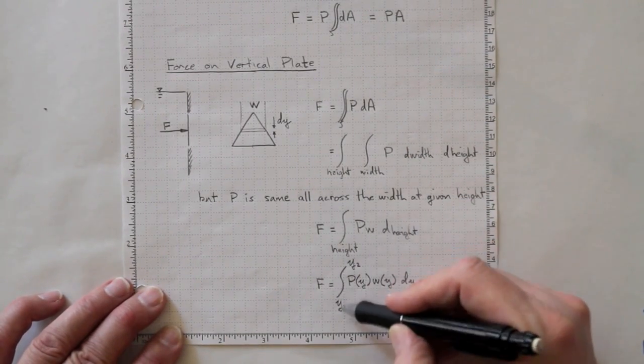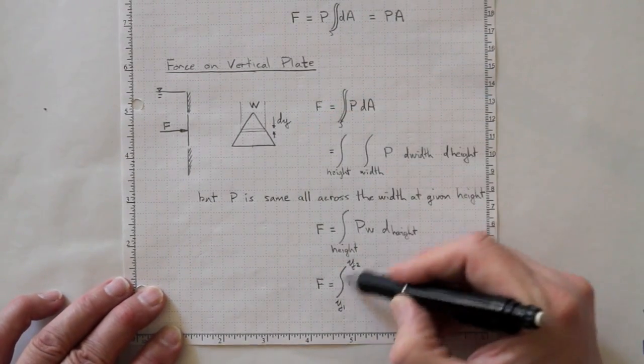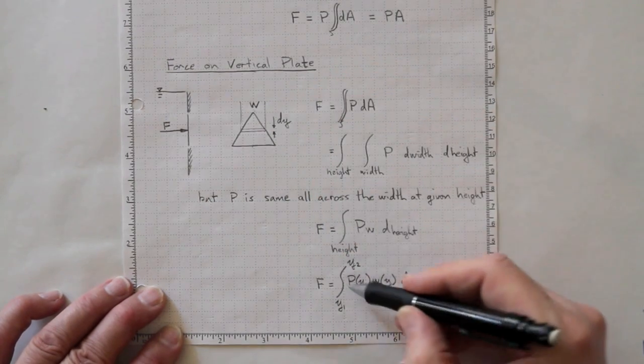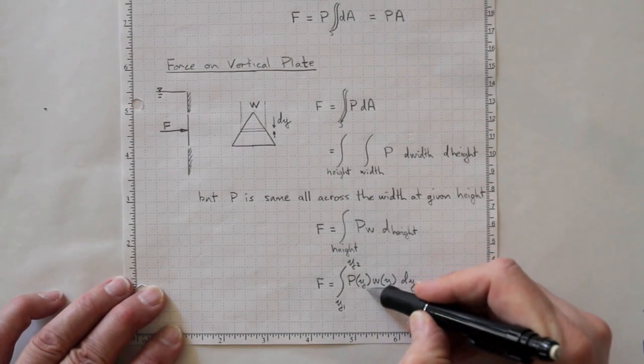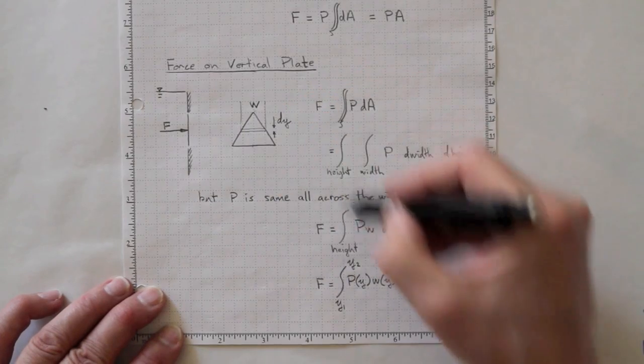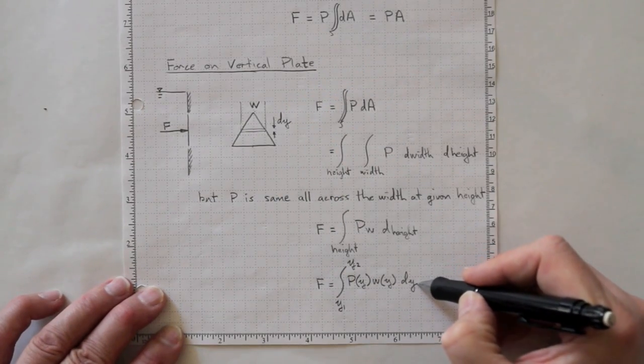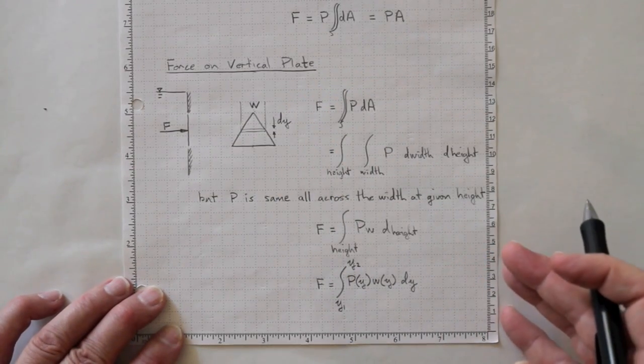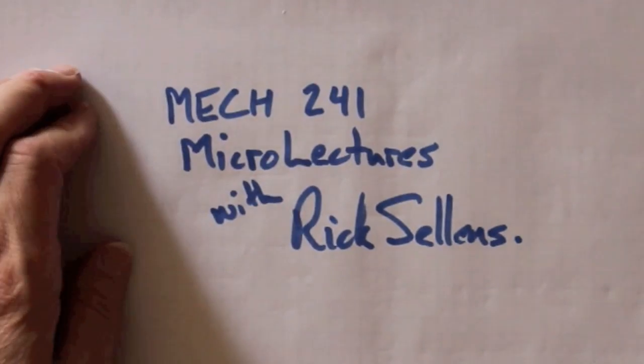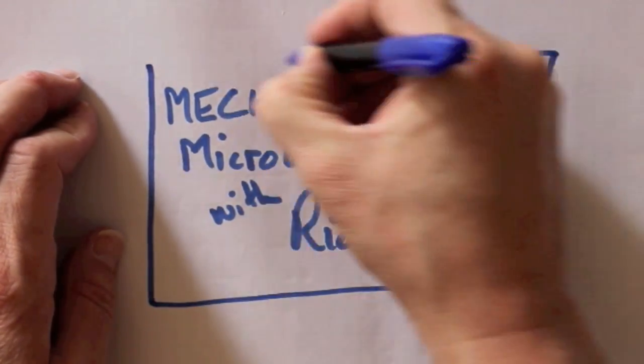f equal to integral from y1 at the bottom to y2 at the top, pressure as a function of y times width as a function of y, dy. And we can do that integration. So that's the most important part.